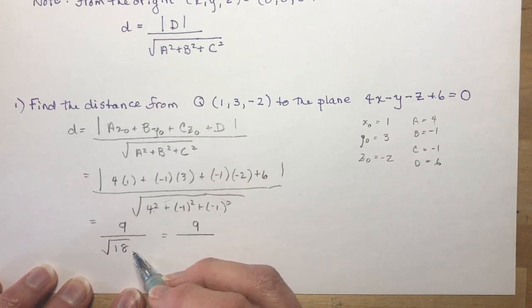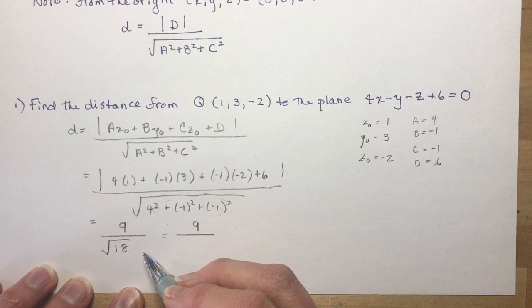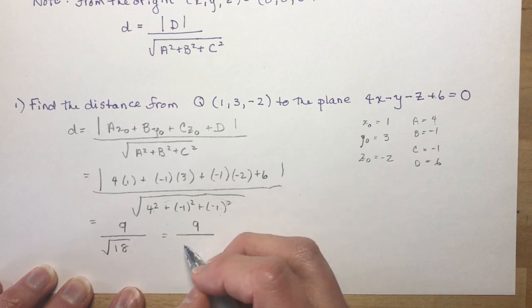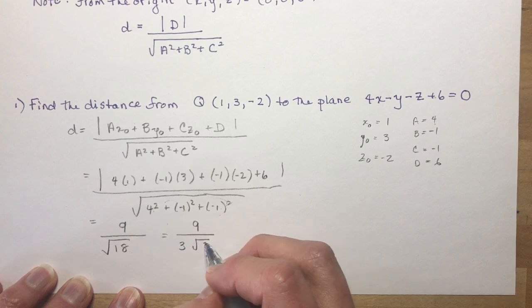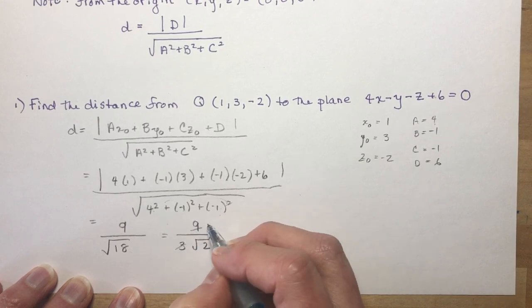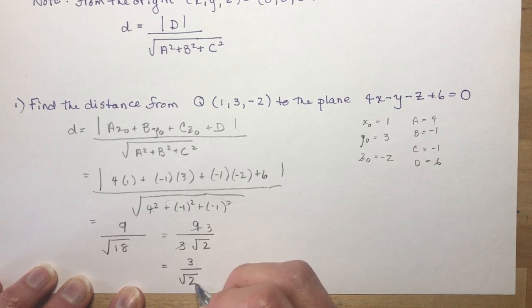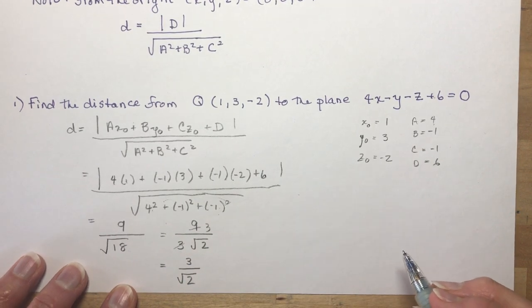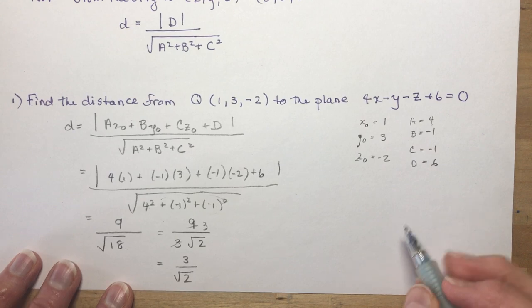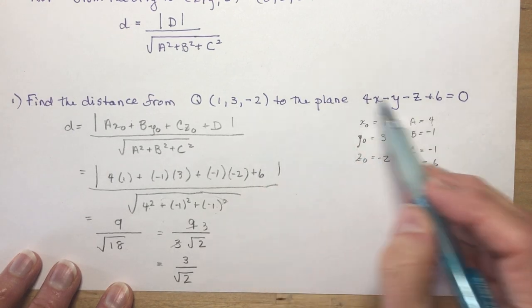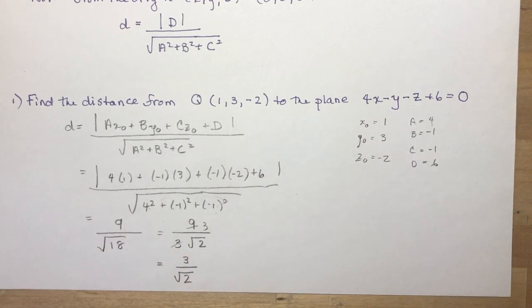And it's going to simplify for you, right? So I have 9 and the square root of 18, that's going to be 9 square root of 2. Sorry, 9 times 2. So the square root of 9 is 3, so that gives me 3 root 2. And the 3 goes into the 9 three times. See how pretty that turned out? 3 over the root of 2. And there you go. That's the distance from this point to this plane.